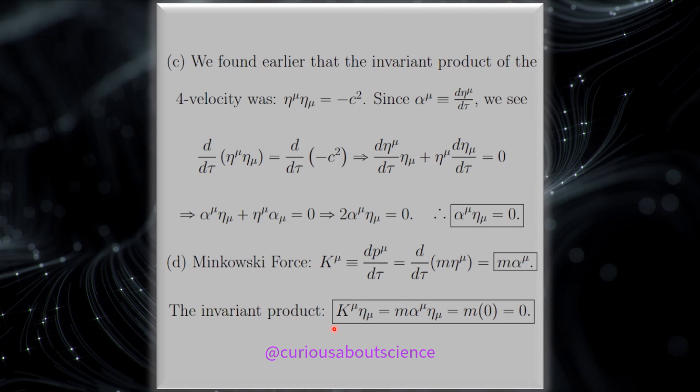And the invariant product, therefore, k mu, eta mu is equal to the k term here, the eta. And we just showed that alpha and eta in their invariant product gives us zero. So, m times zero, zero. Again, pretty clever. Just got to get used to the jargon, and we'll be good.